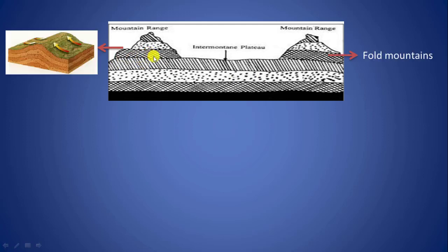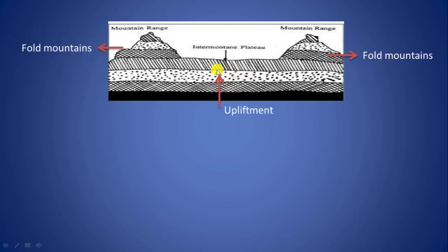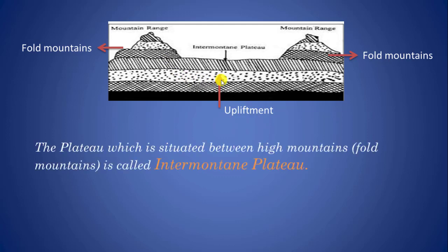During the fold mountain building process, as the fold mountains rise up due to the pressure on rock layers from the sides, this pressure also causes a slow but steady uplift of the area situated between these fold mountains. In this way the intermontane plateau is formed. So the plateau which is situated between high mountains, generally fold mountains, is called an intermontane plateau.